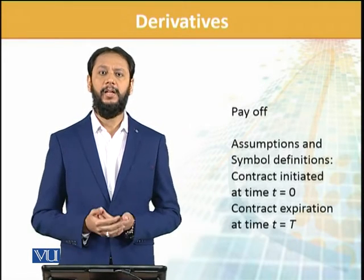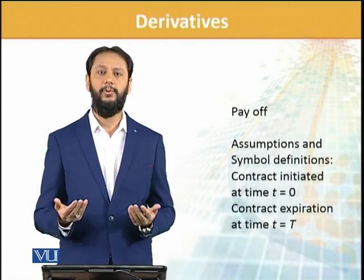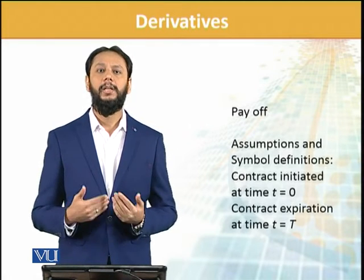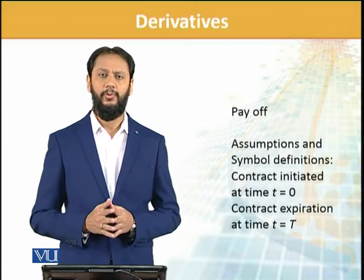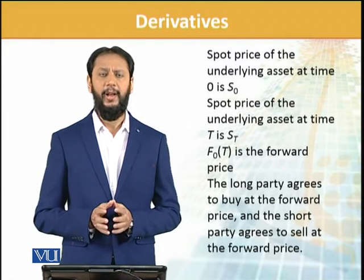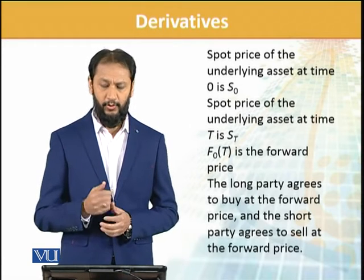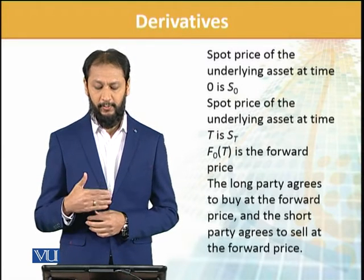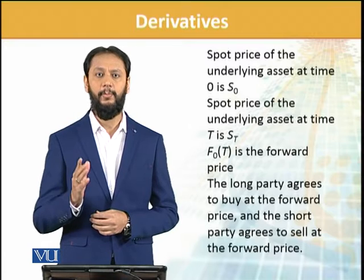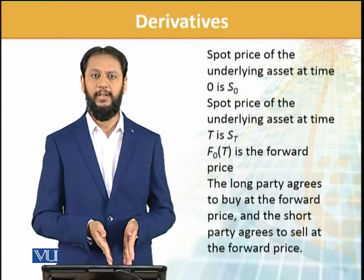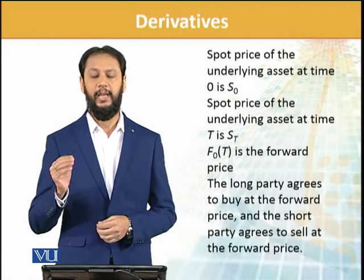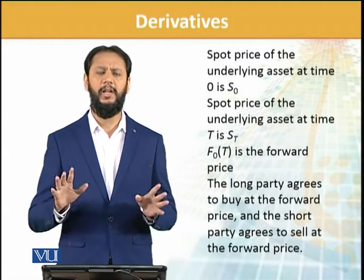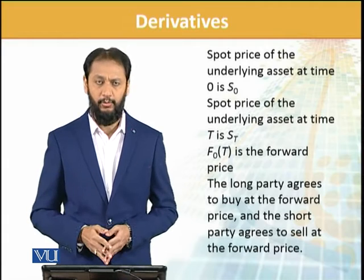Payoff نکالنے کی ضرورت ہے۔ کچھ contracts cash settled ہوتے ہیں، کچھ actually delivery based ہوتے ہیں۔ Delivery میں چیز مل جائے گی؛ cash settlement میں جو gain یا loss ہوگا اس کی transaction ہوگی۔ Spot price کسی بھی چیز کی current price ہوتی ہے — اس کو ہم S₀ سے denote کرتے ہیں۔ Future کے context میں ہم forward price agree کر لیتے ہیں، اور ایک price ہوگی at the time of maturity یا settlement۔ Examples سے یہ کافی easy ہو جائے گا۔